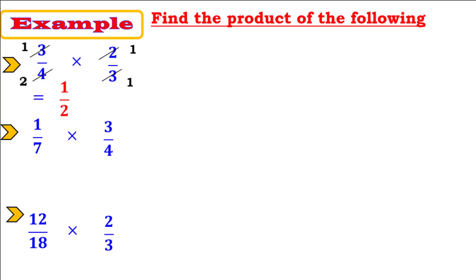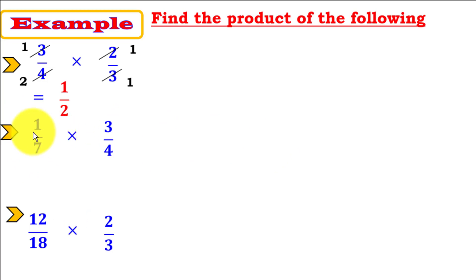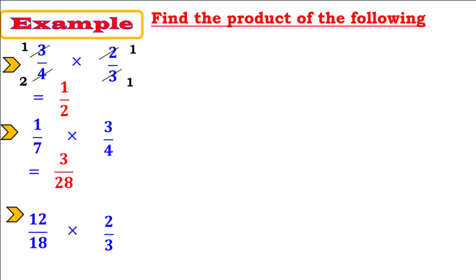Look at the second example: 1 over 7 times 3 over 4. We have no common factors here, so we multiply the two numerators and the two denominators directly. 1 times 3 equals 3, and 7 times 4 equals 28. The product is 3 over 28.